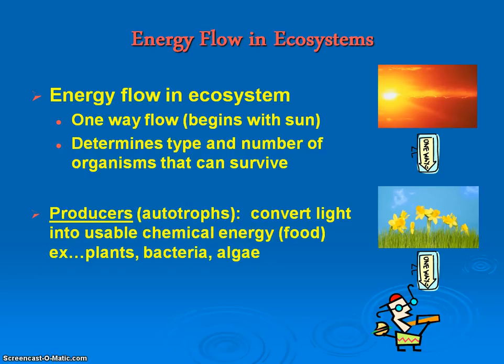We know that energy is harnessed by our producers or autotrophs. Our producers — our green plants — are going to go through photosynthesis to harness that light energy. They'll be able to take that light energy and through photosynthesis convert it into a chemical energy that can be used as food. Usually that chemical energy is going to be stored as starch.